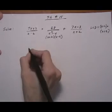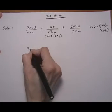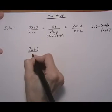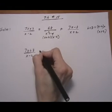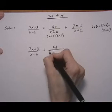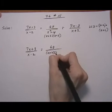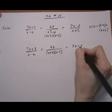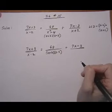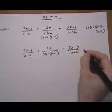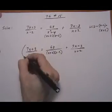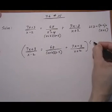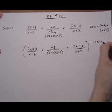Now we're going to multiply both sides of our equation by the LCD. 7x plus 3 over x minus 2 equals 68 over, keep it in factored form, x plus 2 times x minus 2 plus 7x take away 3 over x plus 2. Multiply both sides by the LCD of x plus 2 times x minus 2.